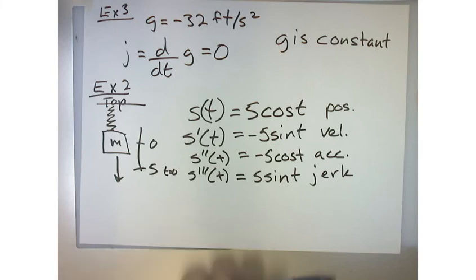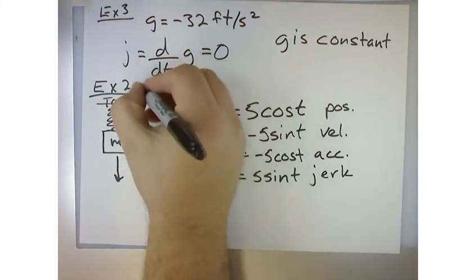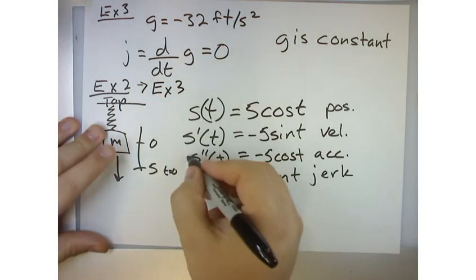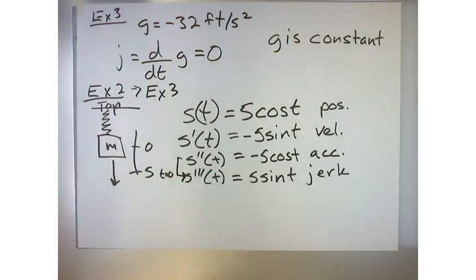That's actually example number three. Zero? Well, example number three just wanted us to go from here to here. Oh. If we calculated in example number two what the acceleration was, and then example number three wanted us to calculate what the jerk was.